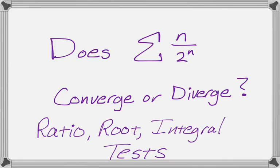In this video, we're going to figure out if the sum of n over two to the n, as we go from some finite number to infinity, converges or diverges. We're going to use the ratio test, the root test, and the integral test — and it's probably going to feel like we made a series of poor choices as we go on. So let's take a look.